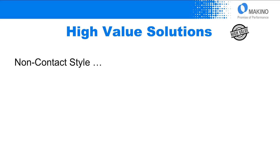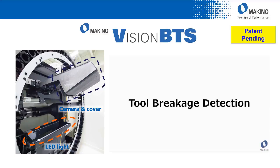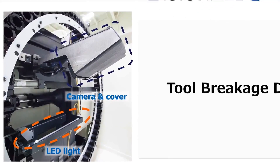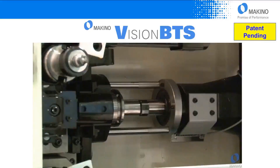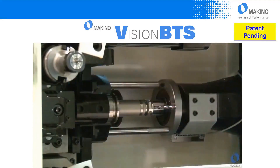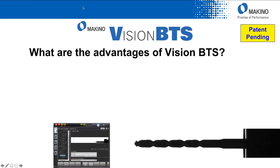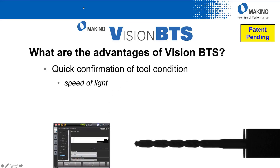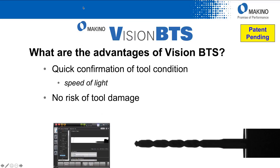So the alternative certainly exists here — the non-contact style. The solution that Makino offers is what we call Vision BTS. Basically using cameras to look at the tools as they come out of the machine on the tool magazine side to look for tool breakage. The system consists of a backlight, a background which typically is going to be the back side of the shutter door, and the camera itself. A tool change executes, a picture of the tool is taken, and that next tool is already in the spindle ready to go — goes right into cycle, zero impact to the overall machining time. Advantages include quick confirmation — a tenth of a second operation — that all happens while that next tool is in transit down to pick up the cut. No risk of tool damage, and a very simple system with only one moving part.